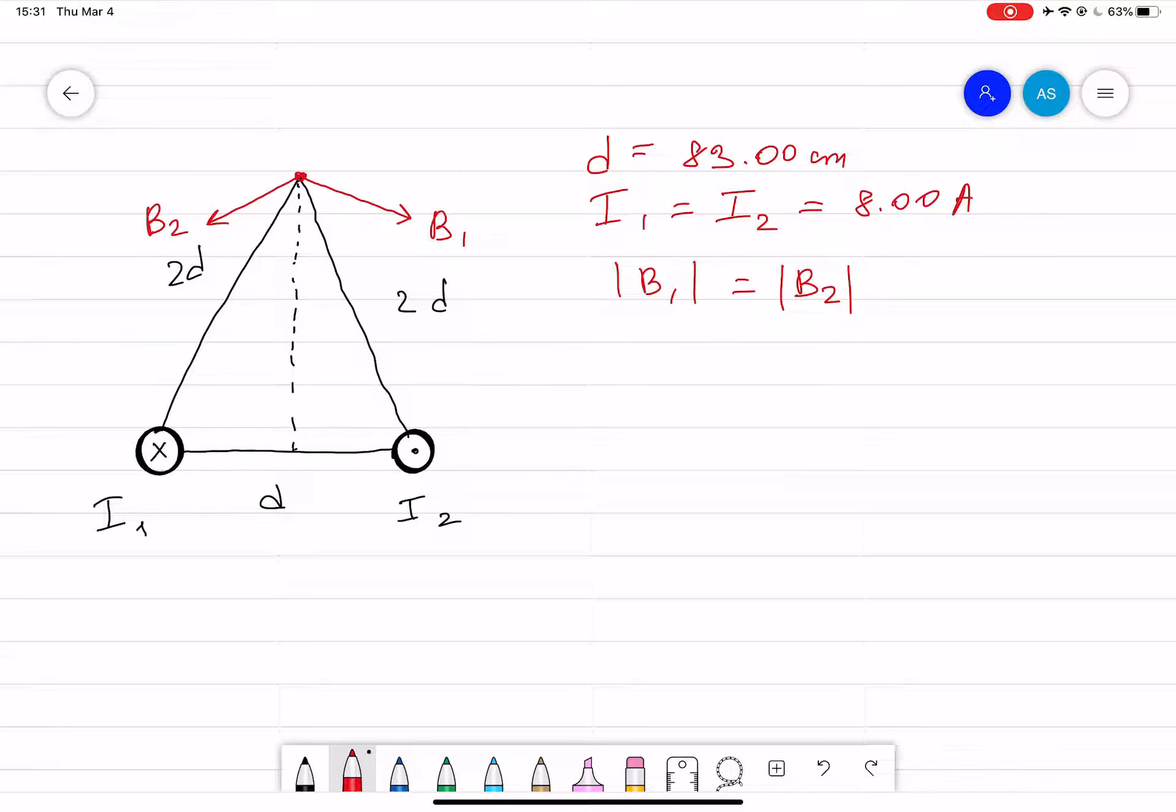We also know that B1 and B2 in magnitude is equal by the formula mu_0 I divided by 2 pi r. Now the r distance in this case will be mu_0 I over 2 pi multiplied by 2d, because that's r. 2d is our r.